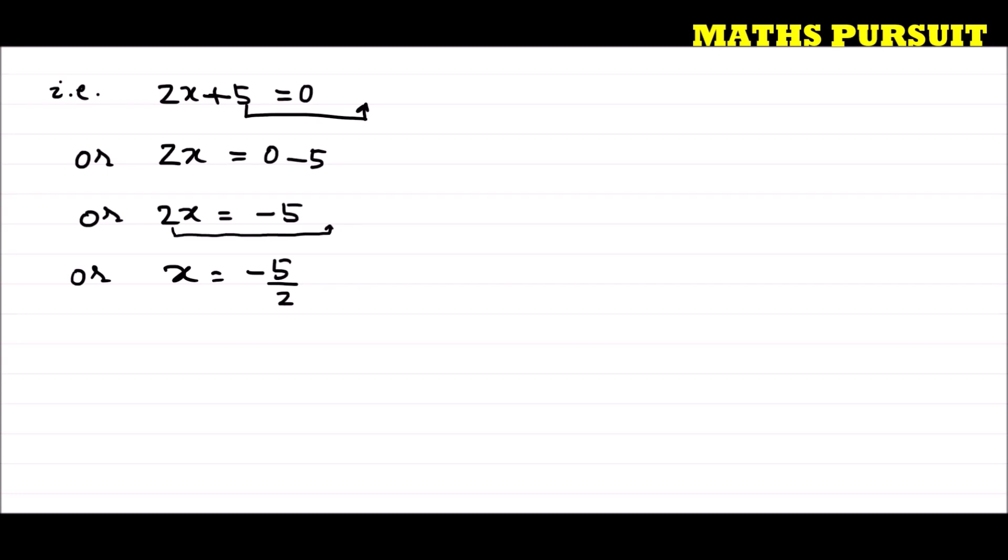When x = -5/2, we will get the zero of the given polynomial. So we can write, so the zero of the given polynomial is -5/2.